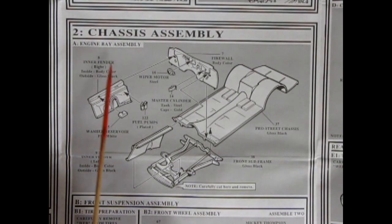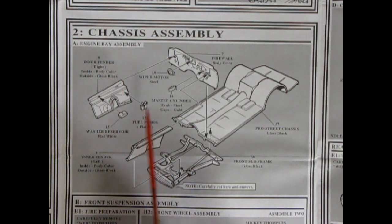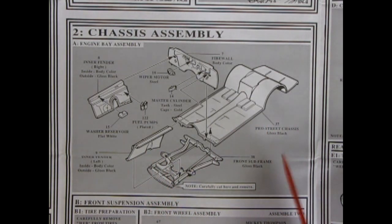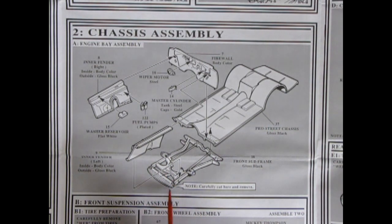And here's your chassis assembly coming up next. The engine bay assembly. So right here we got our firewall, our windshield wiper motor, master cylinder going on, dual fuel pumps gluing onto the inner fender here. And then our washer reservoir going up top. And then the second inner fender. It says here to carefully remove this curved area and cut straight across for your front subframe to glue onto your Pro Street chassis. Right on!